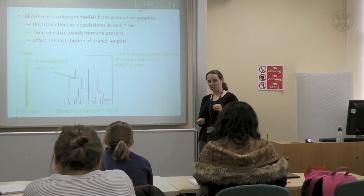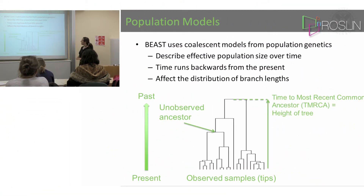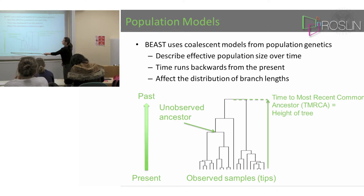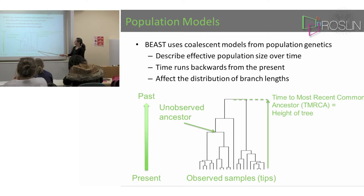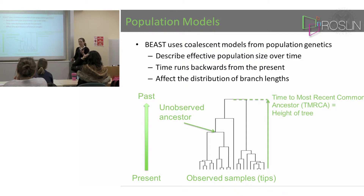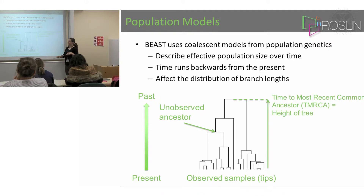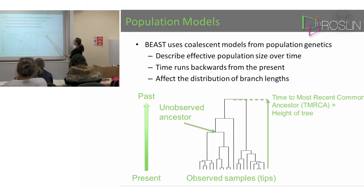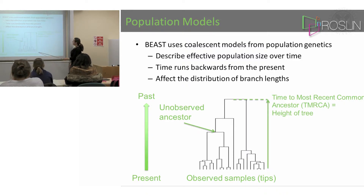In the population genetics models, time runs backwards from the present — from present to past. You have observed samples which are the tips of the tree. The reason it's called the coalescent model is that for each pair of samples, you ask how many generations you must go back so that the two samples share a common ancestor. For the whole collection of samples, there is a most recent common ancestor, and the height of the tree is called the time to the most recent common ancestor.